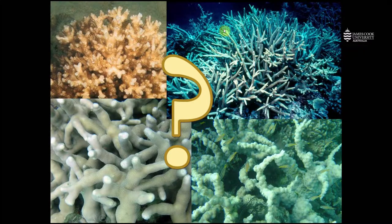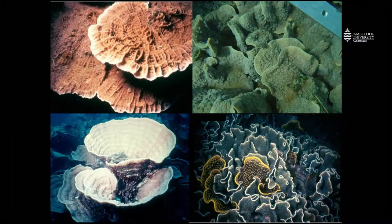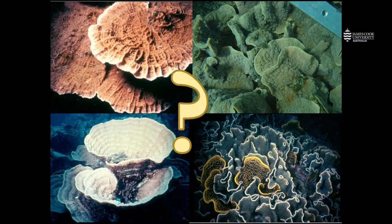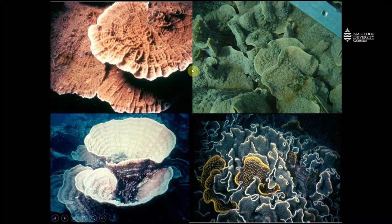These colonies are growing outwards, forming black branch-like structures. Again, we have these contorted branches and relatively small coralite sizes. Now let's look at these corals — they're growing outwards from the edge, and only the central part of the colony is attached to the reef substratum.